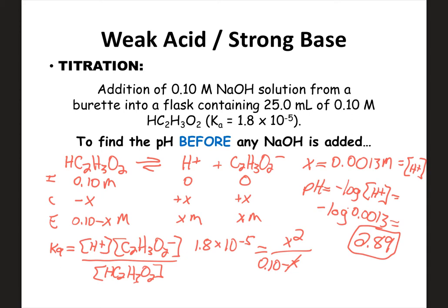So anytime you're doing one of these weak-strong titrations, initially, because you're dealing with a weak acid or base, you're going to have to do an ice table in order to figure out the pH. It's definitely different than a strong-strong — it is a little bit more work initially for a weak-strong.